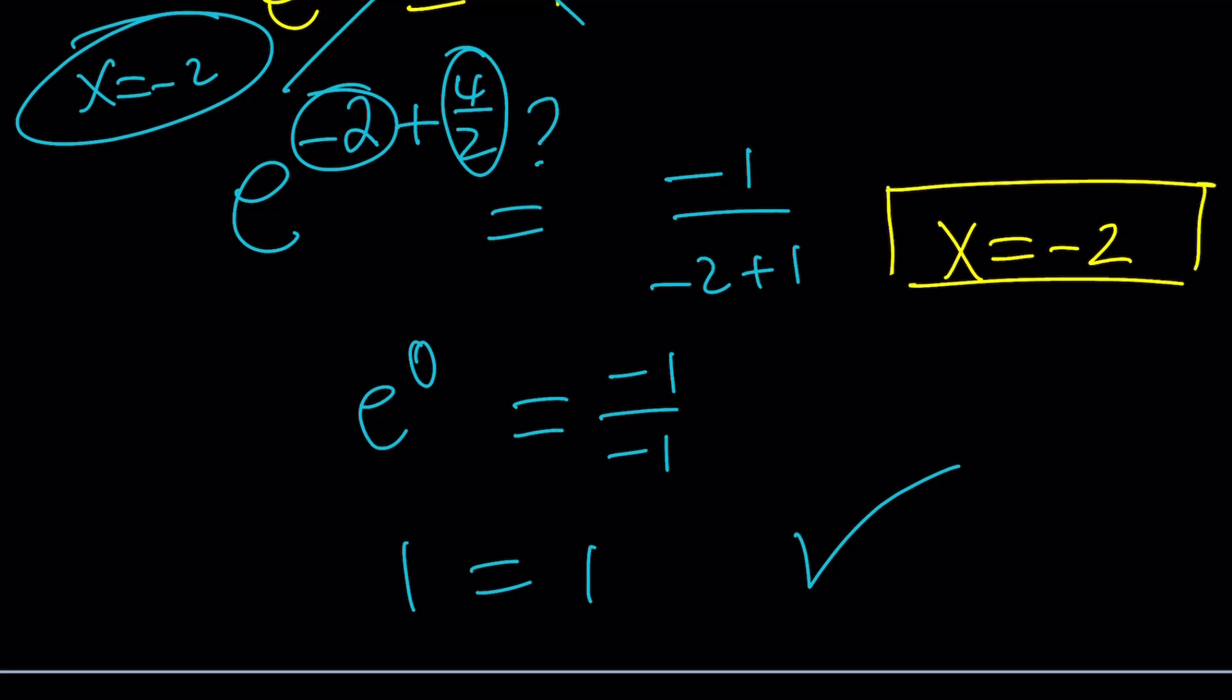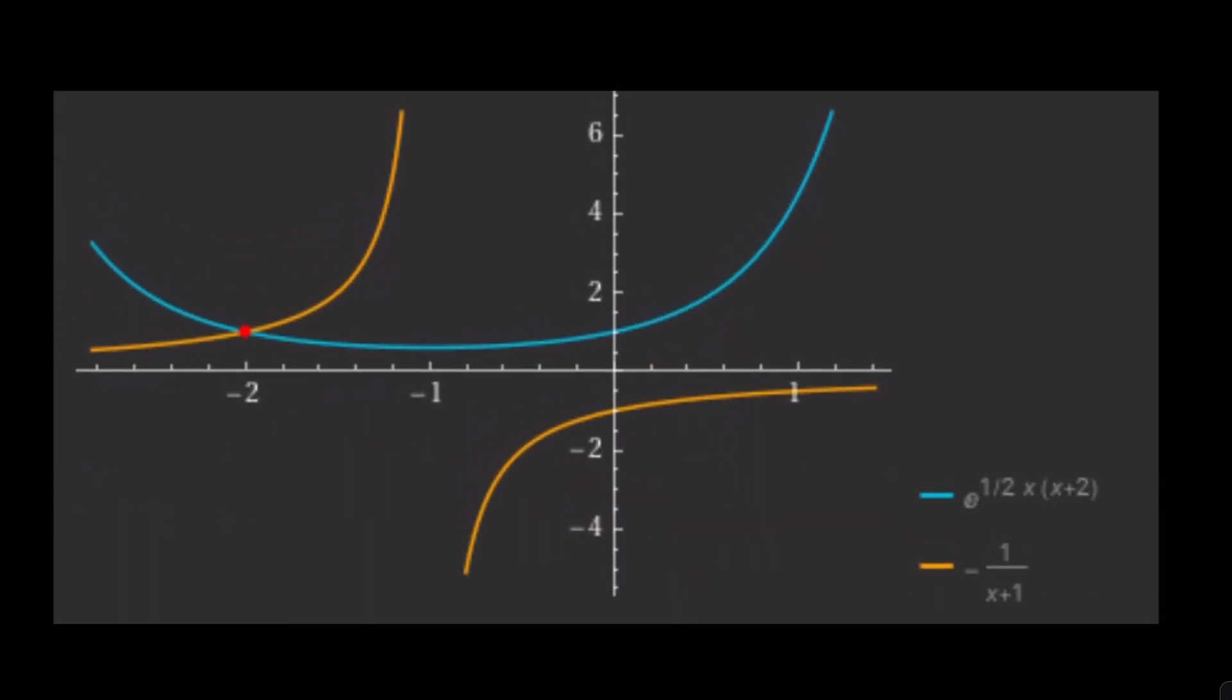Okay, let's go ahead and take a look at the graph of something. The graph of these two functions, right? The original ones. And as you can see clearly, hopefully, on this, that they intersect at x equals negative 2.